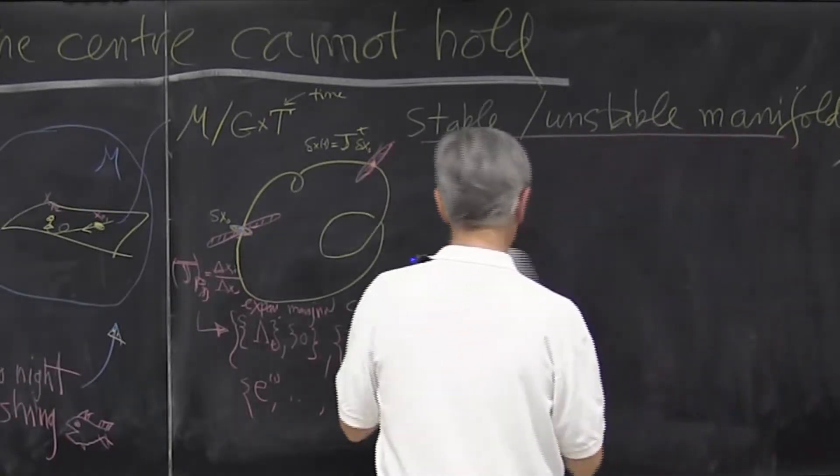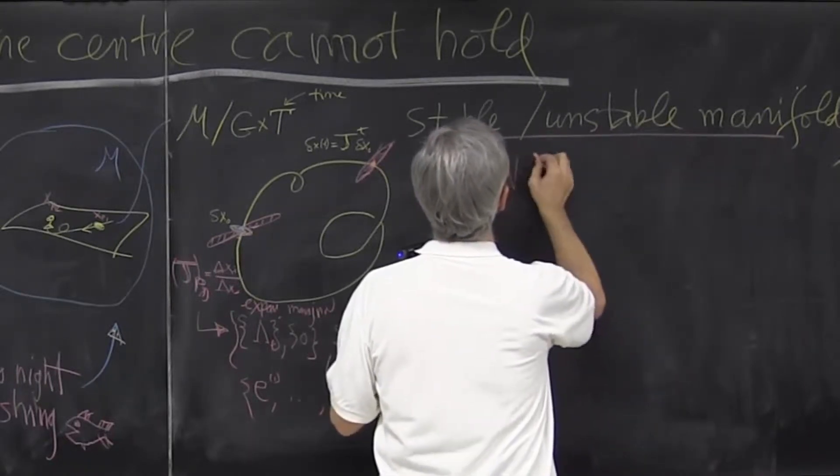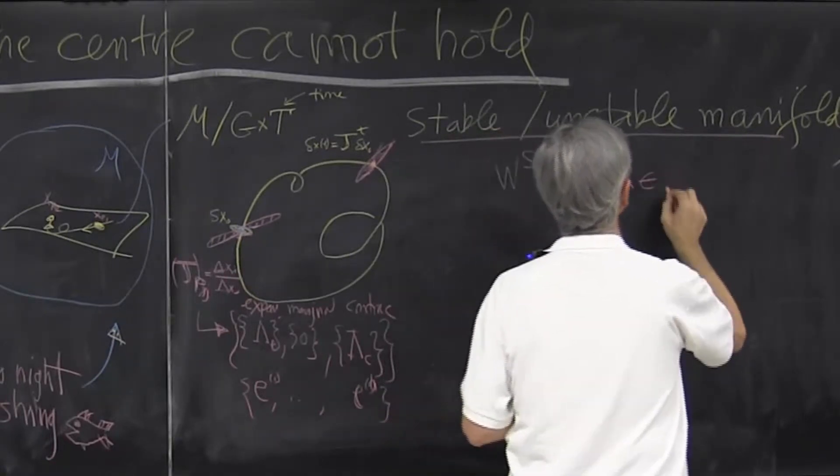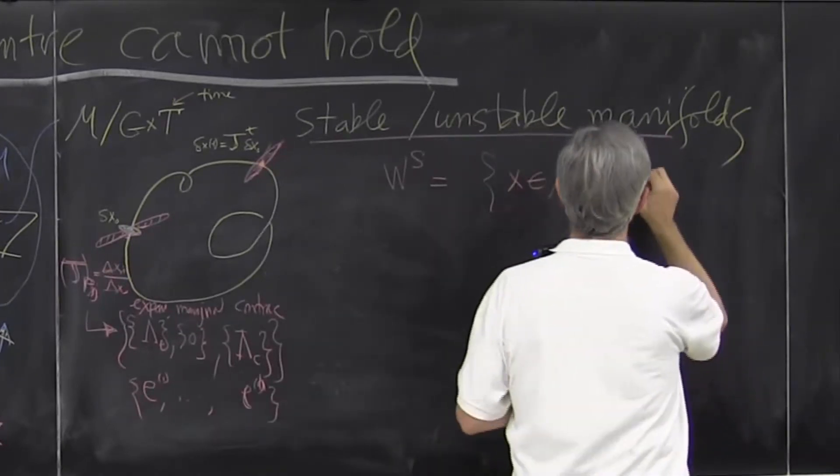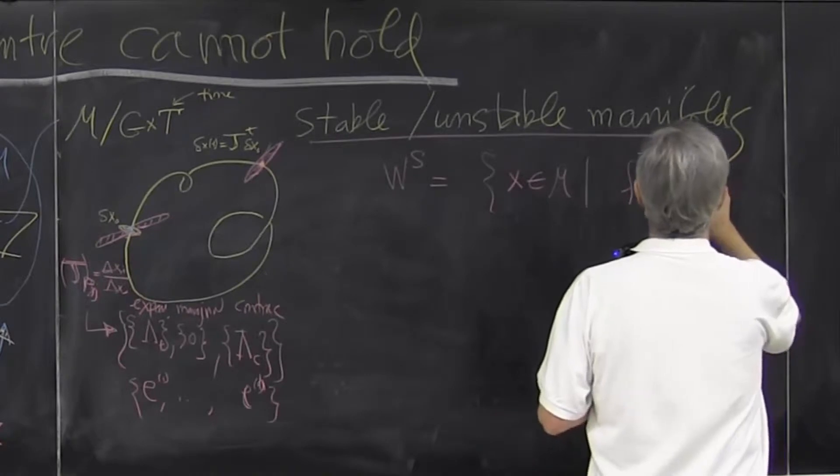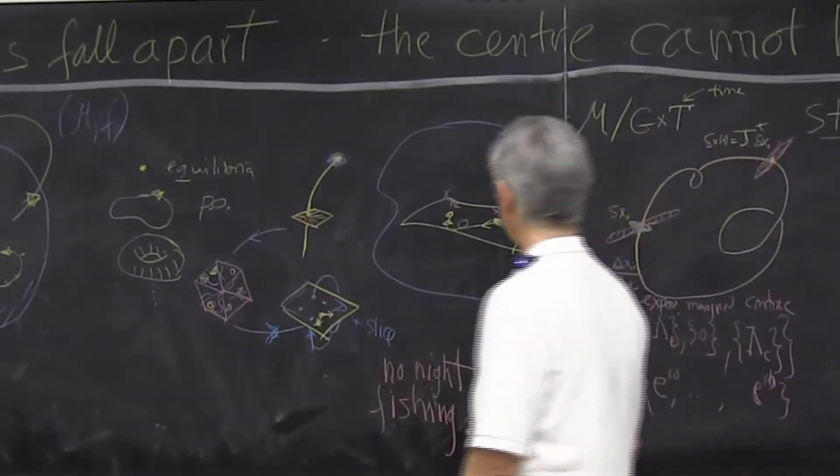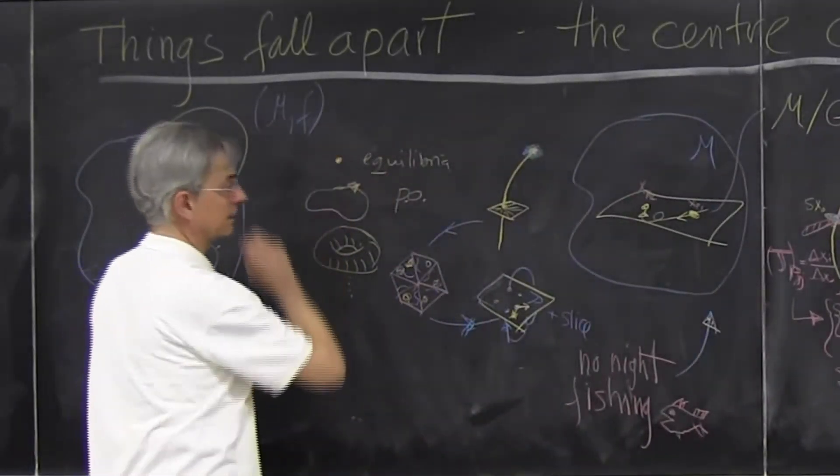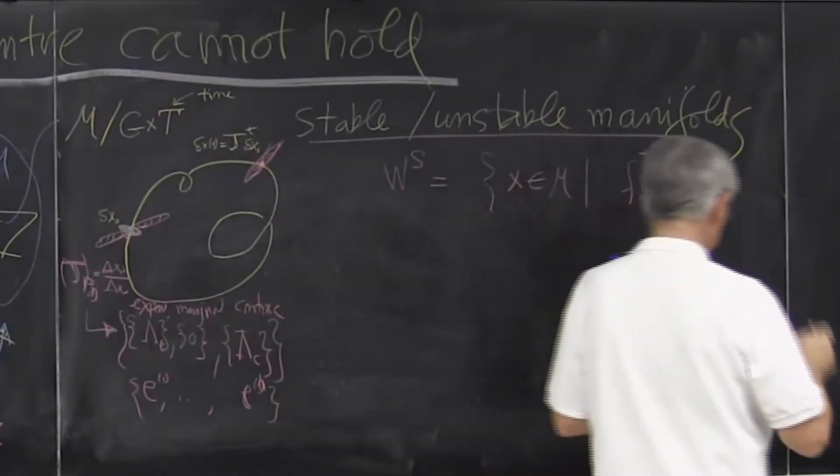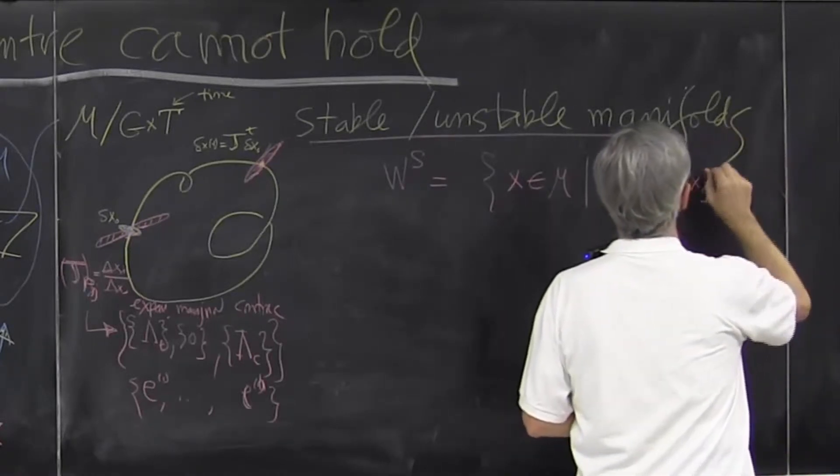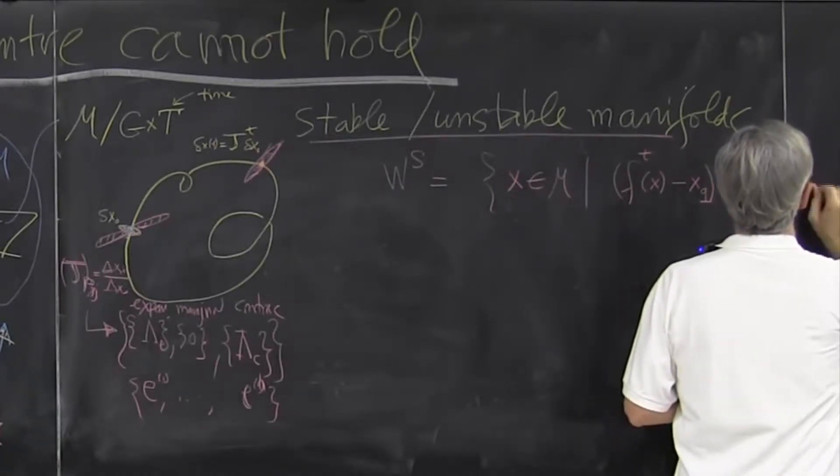and we can define them as sets of points in the entire state space such that if I measure the distance from the equilibrium point, actually I don't measure the distance, I just see how the map goes, and that's important. This goes to zero as t goes to infinity.